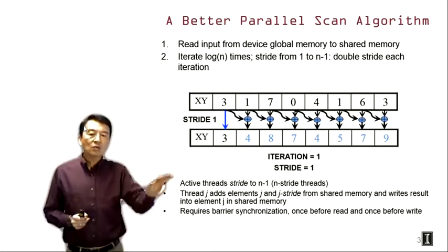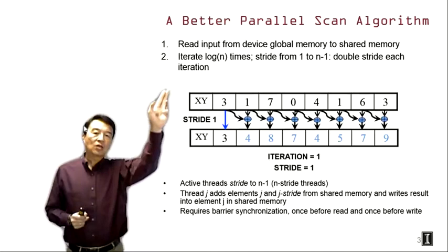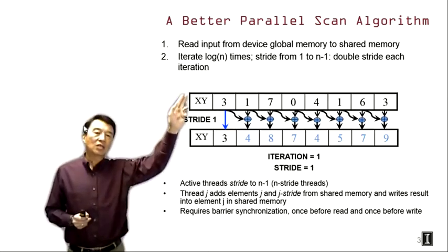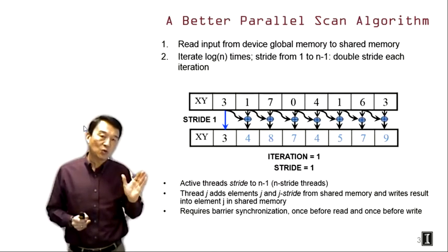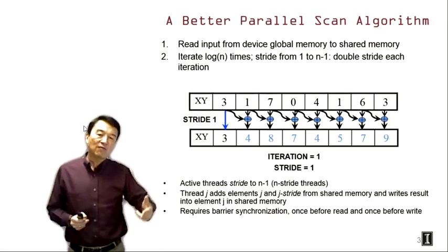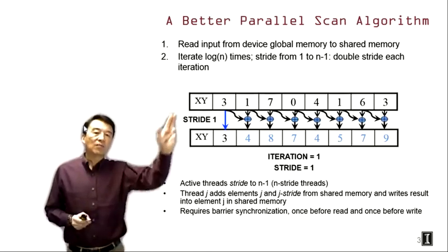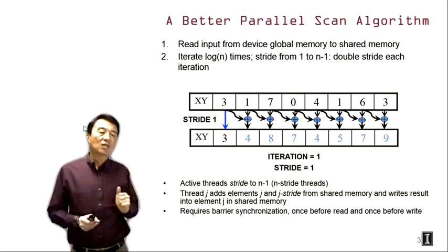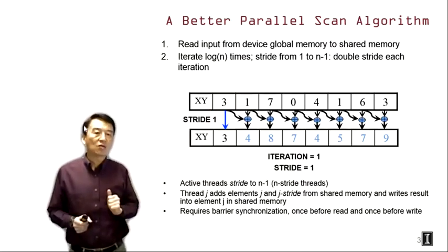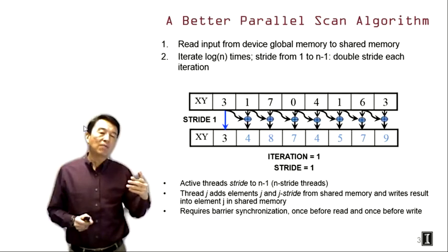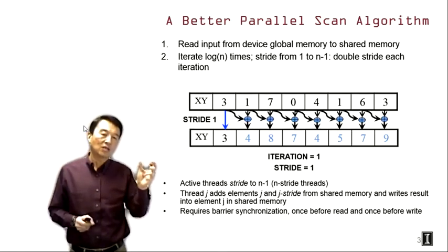Then we're going to go into the iterative part of the kernel, where every thread is going to iterate log n times. We're going to have a stride variable similar to the stride we had in the reduction, going from one to n minus one, and we're going to double the stride value in each iteration. The stride value is always a perfect power of two: one, two, four, eight, and so on. The iteration will end whenever the stride reaches a power of two just short of n minus one.